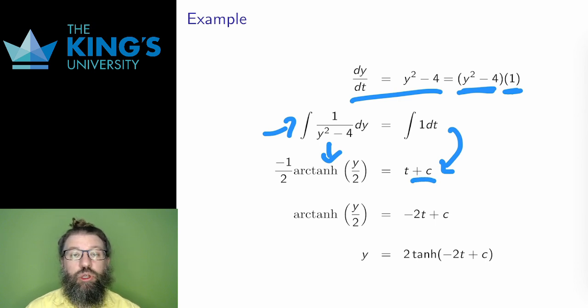Then I solve for y, multiply by negative 2, apply hyperbolic tangent to get rid of the hyperbolic arctangent, then multiply by 2 again, and the solution is y equals 2 hyperbolic tangent of negative 2t plus c.